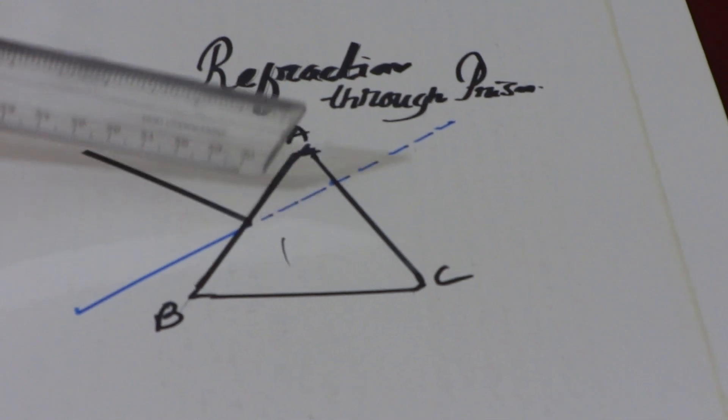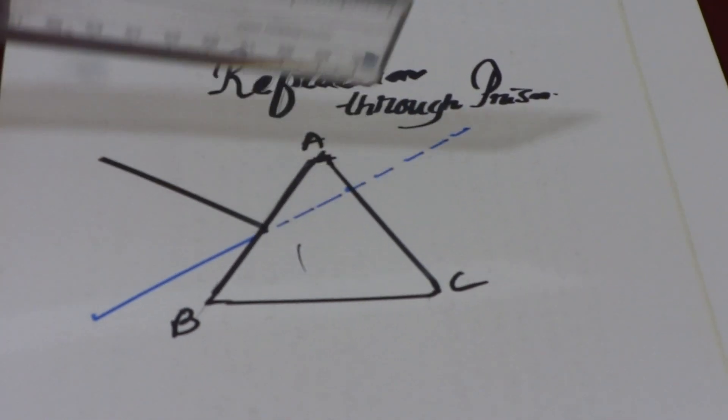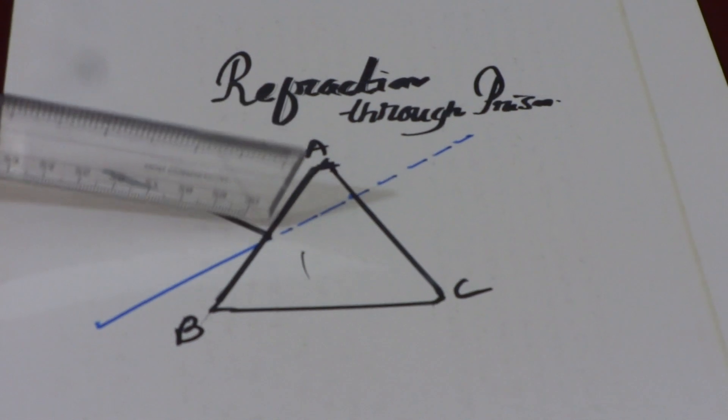Because this blue line which is representing the incident ray is entering into the denser medium, therefore it comes closer to the normal. That means it is refracted.